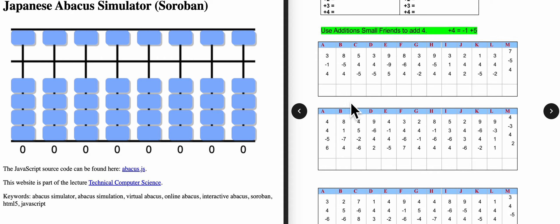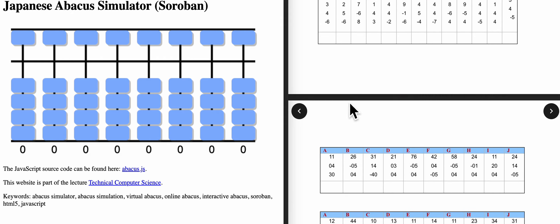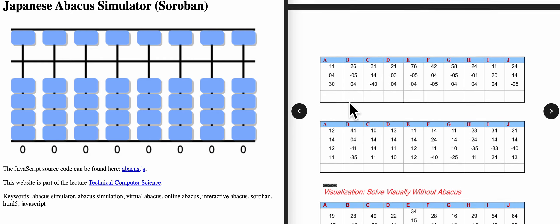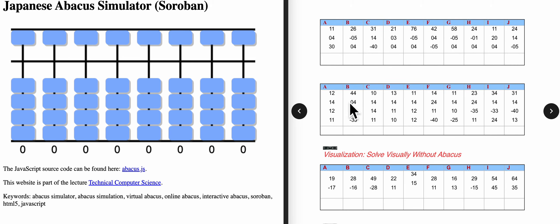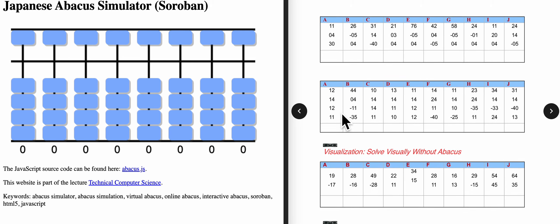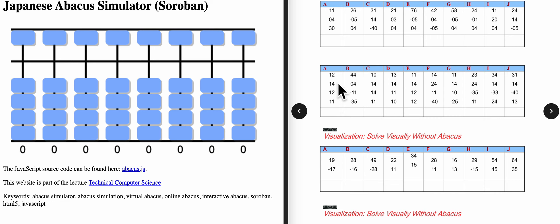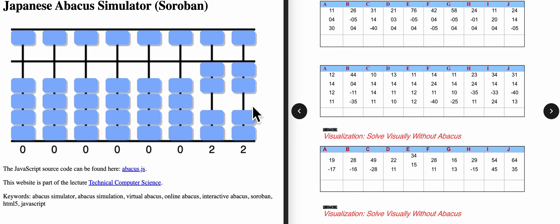Now let's see two-digit numbers. Here are some two-digit number problems. Let's solve these problems. 12, 14. 1 here, 4. Is there enough bits to add here? No.